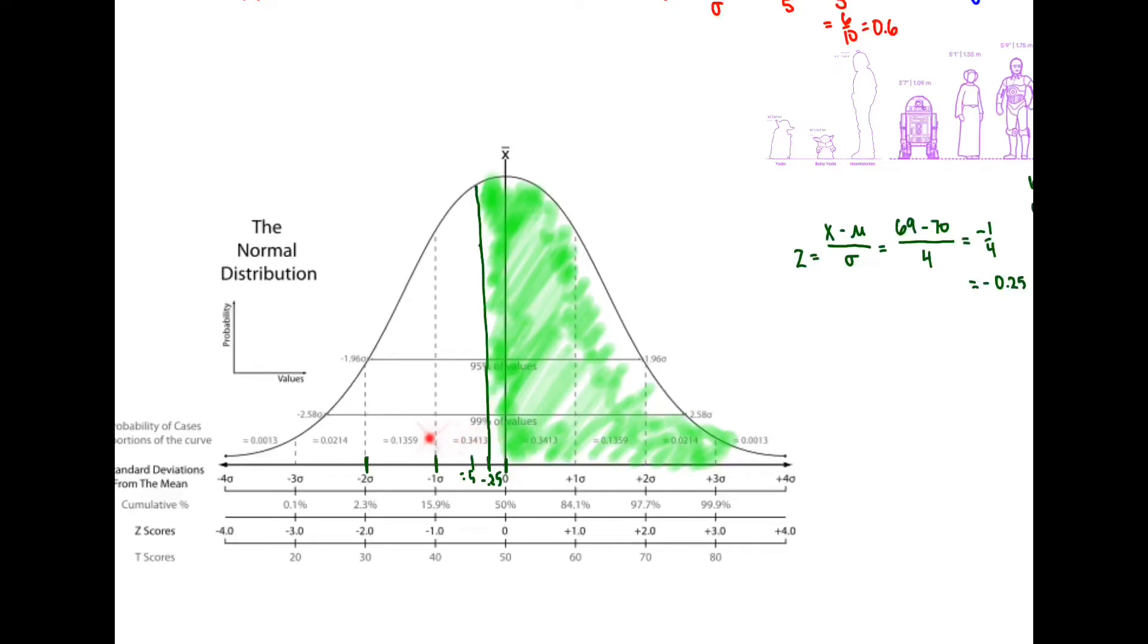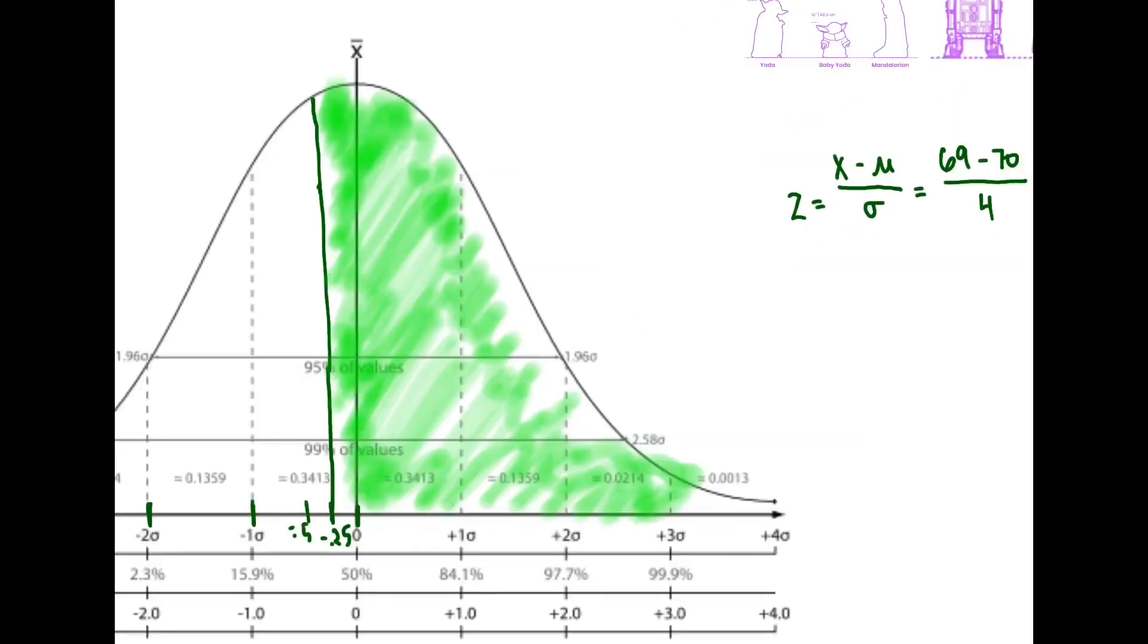Maybe if this is 34, we could perhaps estimate that. So let's split 34 into thirds, right? So 11 and 11. So maybe, I don't know, maybe it's 50 plus 11. So 61. So the answer is maybe 61 percent. That's a pretty good estimate. But guess what? We can do better.